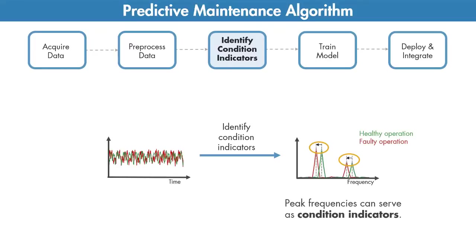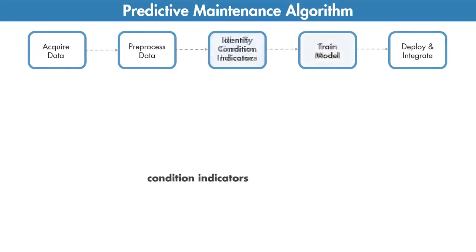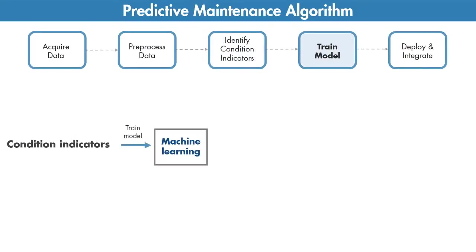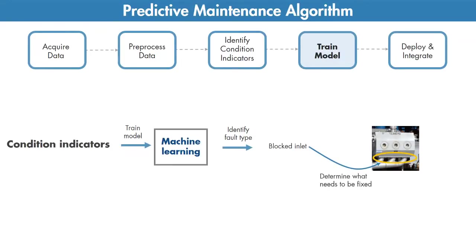But at this stage you are still not sure what part needs repair or how much time there is until failure. In the next step you can use the extracted features to train machine learning models to do the following. You can detect anomalies. You can train a classifier to detect different types of faults so you can gain insight into what part of the pump requires attention.